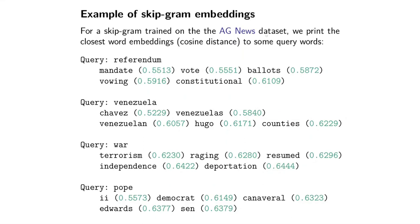Let's look at an example. I've trained the SkipGram model exactly as explained before on the AG News dataset. To visualize qualitatively what the model is learning, I train the model on this dataset and then give it a particular word — for instance, 'referendum' — and then I find, according to cosine distance, all the words in my vocabulary closest to 'referendum'. Remember, 'referendum' has a particular word embedding associated with it.